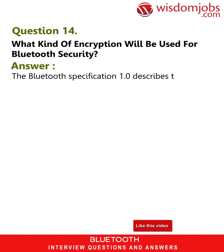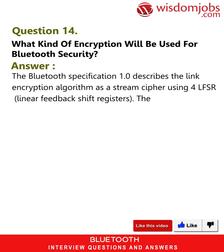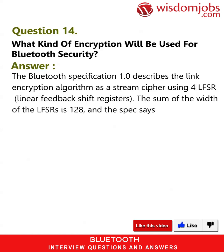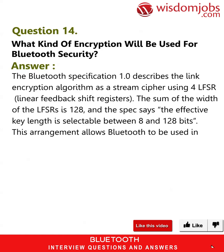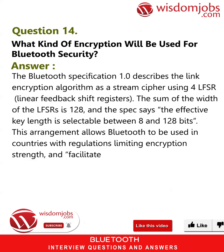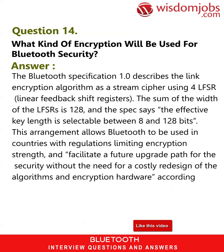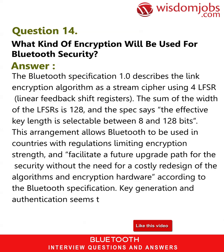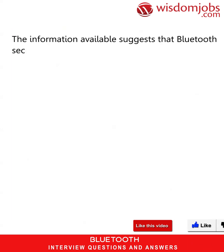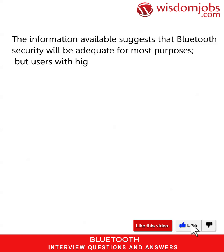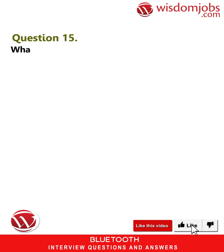Question 14: What kind of encryption will be used for Bluetooth security? Answer: The Bluetooth specification 1.0 describes the link encryption algorithm as a stream cipher using four linear feedback shift registers (LFSRs). The sum of the widths of the LFSRs is 128, and the spec says the effective key length is selectable between 8 and 128 bits. This allows Bluetooth to be used in countries with regulations limiting encryption strength and facilitates a future upgrade path without costly redesign. Key generation and authentication use the 8-round SAFER+ encryption algorithm. Bluetooth security will be adequate for most purposes, but users with higher security requirements will need to employ stronger algorithms.